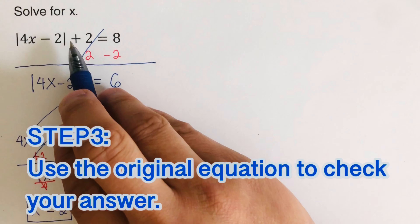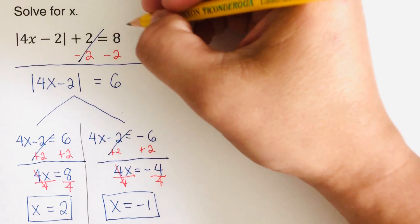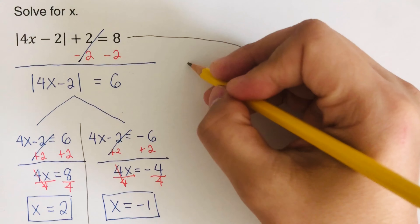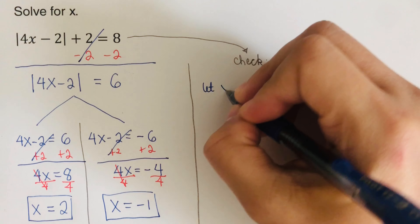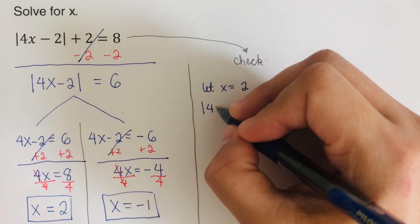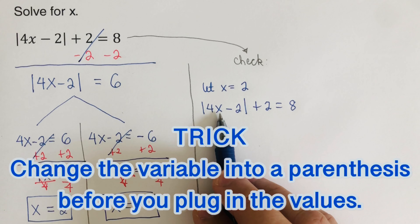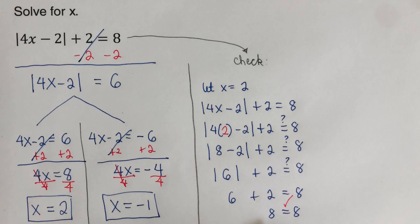Step three: use the original equation to check our answers. It's very important to check. We start with x = 2: rewrite the original equation |4x - 2| + 2 = 8, change the variable to parentheses, plug in 2. We get |4(2) - 2| + 2 = |6| + 2 = 6 + 2 = 8. It checks out — x = 2 works.